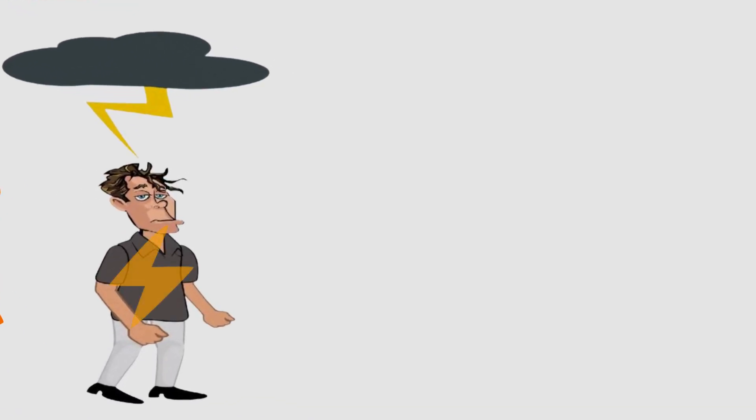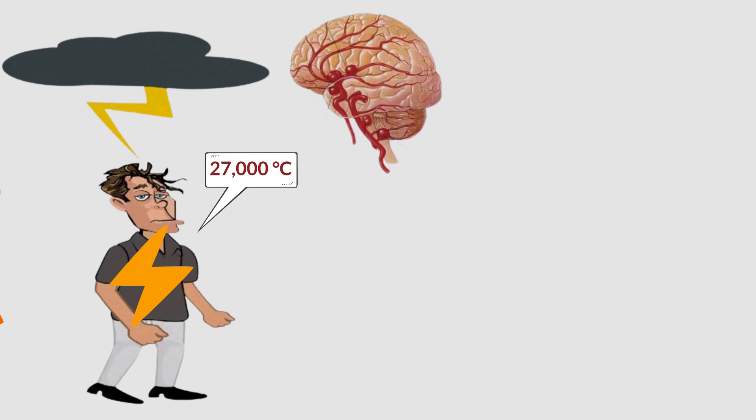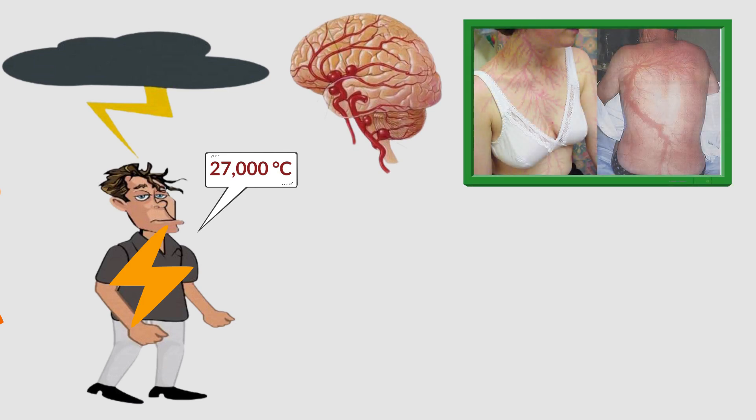If you are struck by lightning, the first thing you have to endure is an electric current that can cause a temperature of 27,000 degrees Celsius. Especially if struck directly, this current is so hot that it will explode your blood vessels. This creates root-like lesions, which are called Lichtenberg scars, as you can see in the picture.